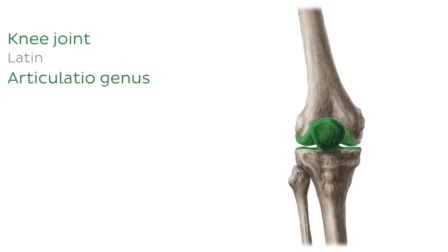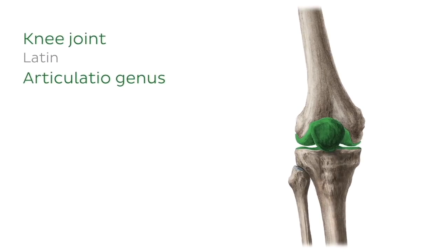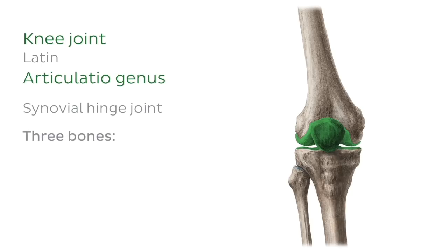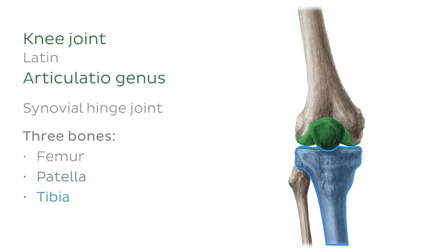So here we can see the knee joint highlighted in green from an anterior perspective. Our tutorial will feature bones that contribute towards this joint, as well as soft tissues that support it, so it's mainly for context. The knee joint is a synovial hinge joint, which is formed by three bones: the femur, the patella, and the tibia. It's worth noting that the femur is actually a bone of the thigh, but because it contributes towards the knee joint, we'll discuss it briefly in our tutorial.